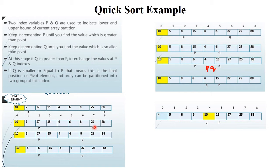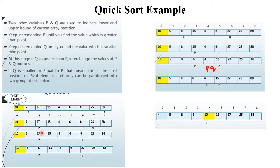Q decrements. Check 8: is 8 greater than 10? No — condition false. Now check: P points to 27, which is smaller than 10 — condition false. Q points to 8, which is greater than 10 — also false. If both conditions are false for P and Q, you perform swapping or interchange. So 8 goes to where 27 was and 27 goes to where 8 was. P and Q positions remain the same; only values change.